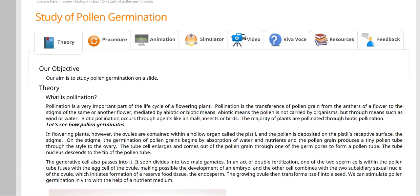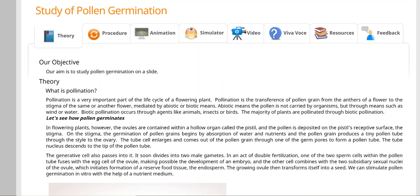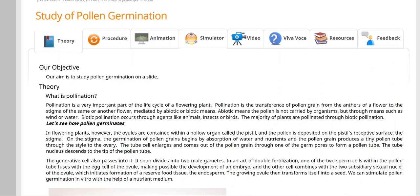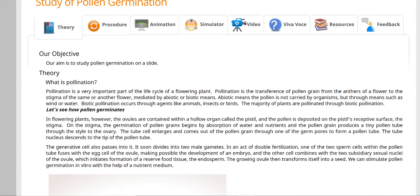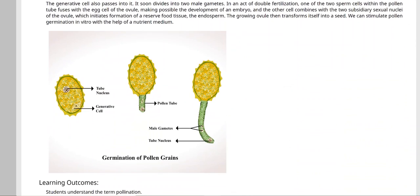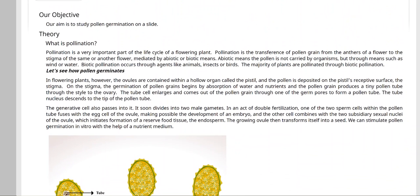Let's see how pollen germinate. In pollen germination there will be a pollen tube form. Actually the pollen tube is observed in microscope. How do pollen tubes form? In flowering plants, however, the ovules are contained within a hollow organ called pistils. You must remember that pistils are formed from stigma, style, and ovary. And the style is hollow.